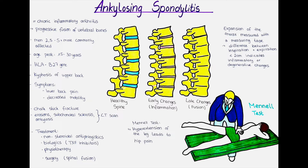It is also possible to measure the expansion of the thorax with a measuring tape. The difference between the diameter of the thorax in expiration and inspiration is typically below 2 cm in patients with ankylosing spondylitis. To test for the involvement of the iliosacral joint, we can check for the menel sign. Here the patient is lying on the abdomen and the doctor hyperextends the leg. If the patient reports pain in the hip upon hyperextension, the test is said to be positive and indicates an inflammatory or degenerative damage to the iliosacral joint.